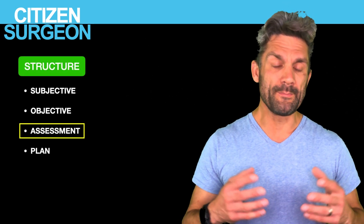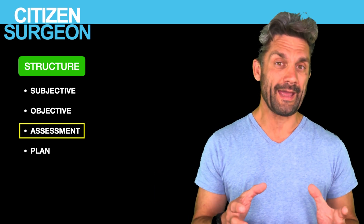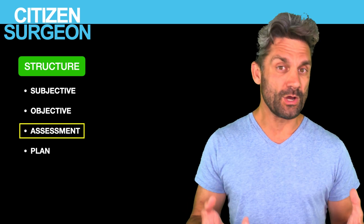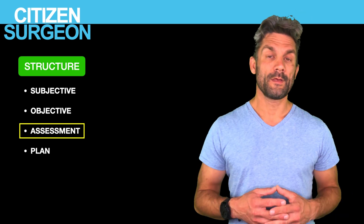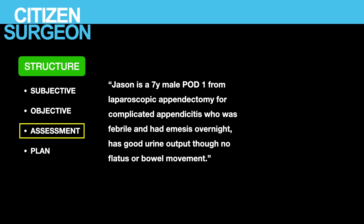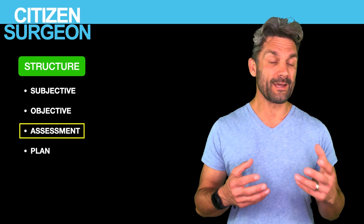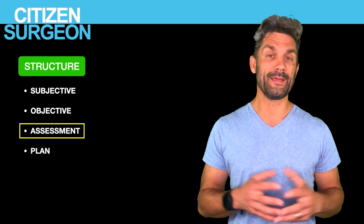For our assessment, this is a brief summary including new events or any trends — you want to bring everybody's attention back. For Jason: this is a seven-year-old male post-op day one from laparoscopic appendectomy. He is ambulating well, tolerating a diet, his pain is well controlled, and he meets discharge criteria. Another assessment in a scenario where it didn't go so well — Jason, a seven-year-old male, is post-operative day one from a laparoscopic appendectomy for complicated appendicitis and he was febrile overnight. He is tachycardic. He had adequate urine output but no flatus, no bowel movement.